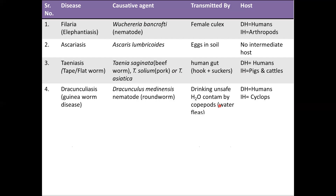Next is dracunculiasis, called Guinea worm disease, caused by Dracunculus medinensis, which is a roundworm. It is transmitted by the consumption of contaminated water containing the water flea called cyclops. Cyclops form the intermediate host for the Guinea worm and its definitive host is humans. This disease is close to eradication in our country as well as around the world.